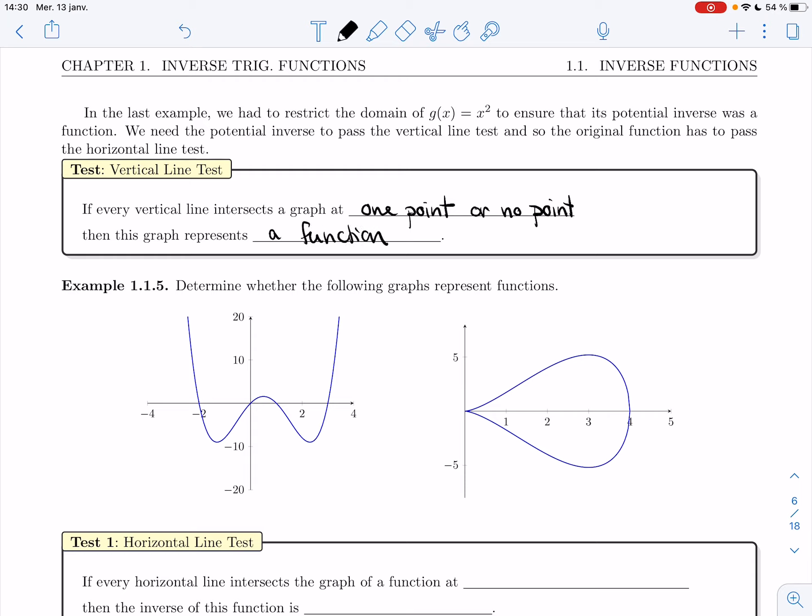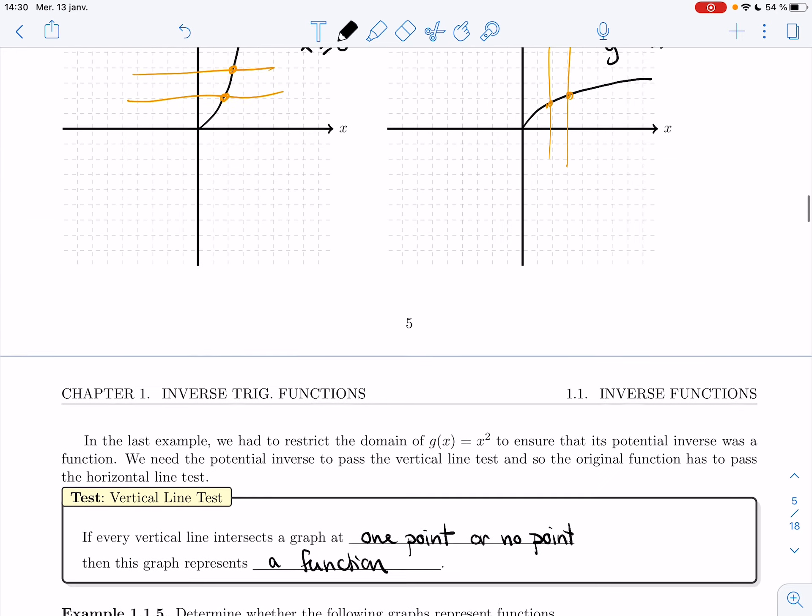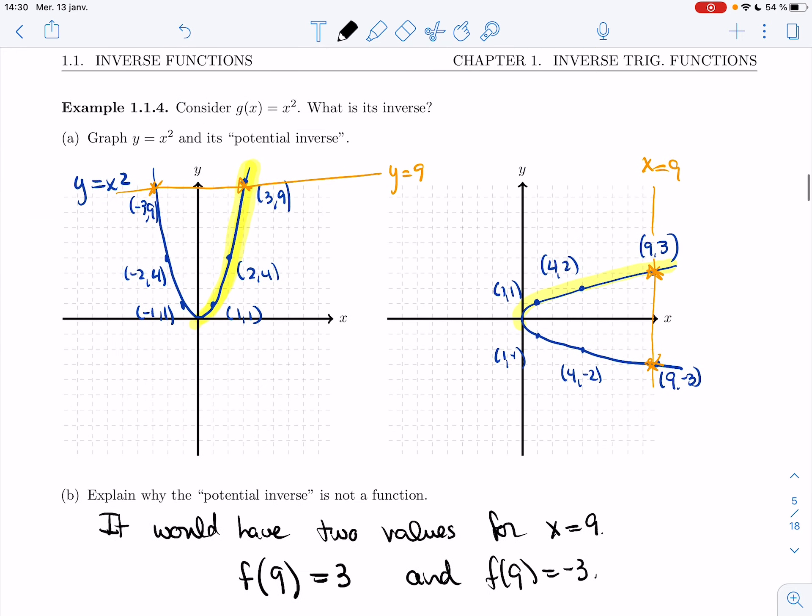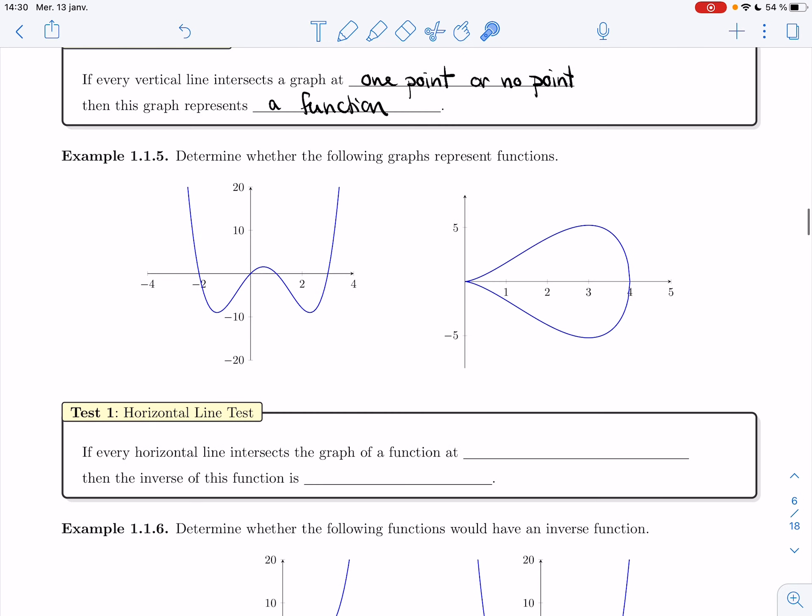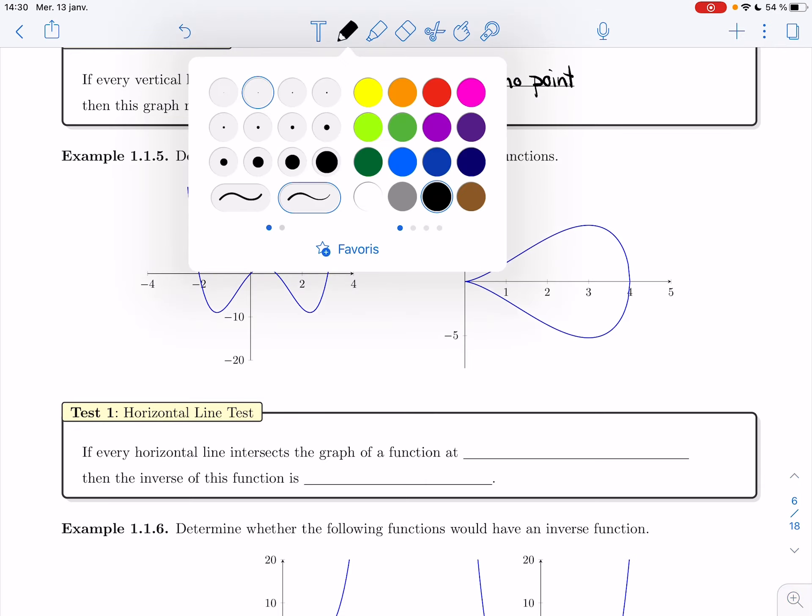So what you're trying to avoid is a situation like we had over here, where one vertical line hits the graph in two or more points, and then you would have multiple values for that x value. So let's look at these two functions.